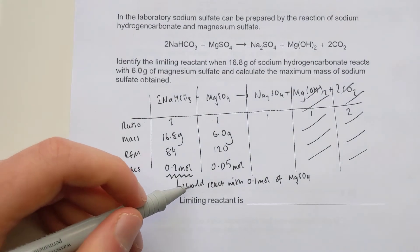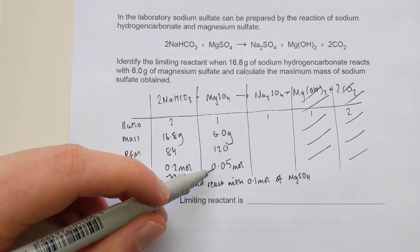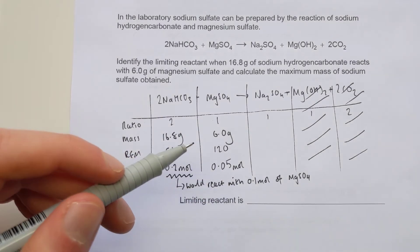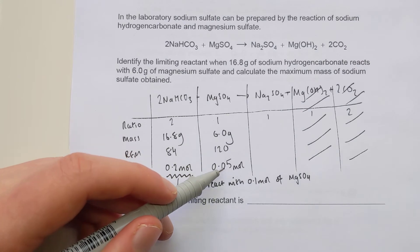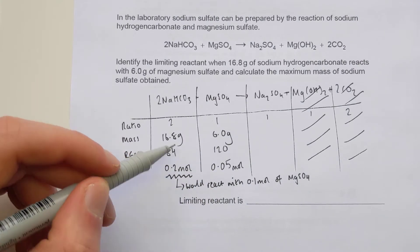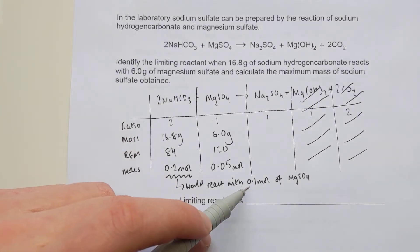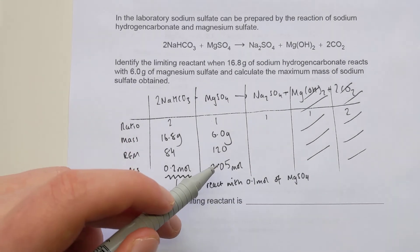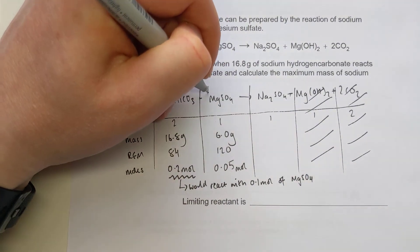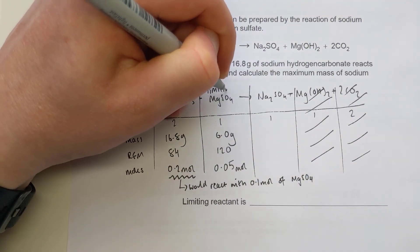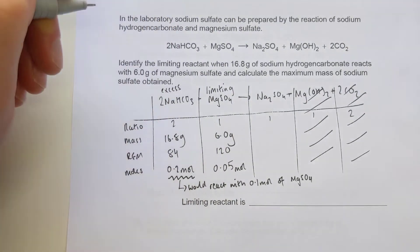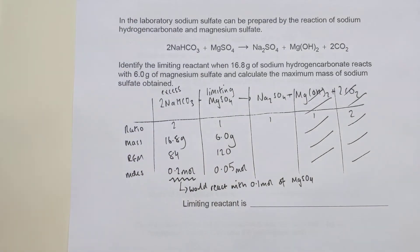Once I've worked out what I need to fully react that, I look at what I actually have. I only have 0.05 moles of magnesium sulfate - in other words, I don't have enough magnesium sulfate to fully react with 0.2 moles of sodium hydrogen carbonate; I would need 0.1 moles. Because I don't have enough magnesium sulfate, the reaction would stop early - we call it the limiting reactant. Sodium hydrogen carbonate is therefore the excess reactant. That's the proper way of working it out.